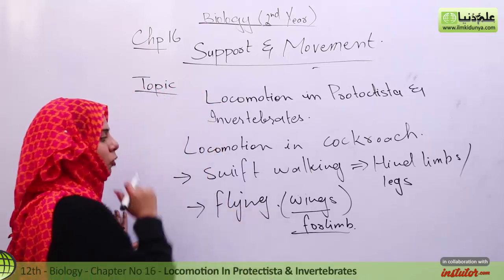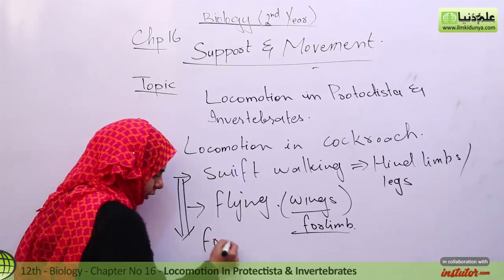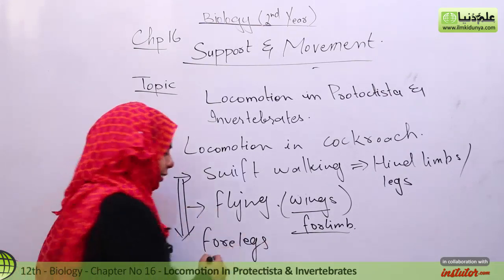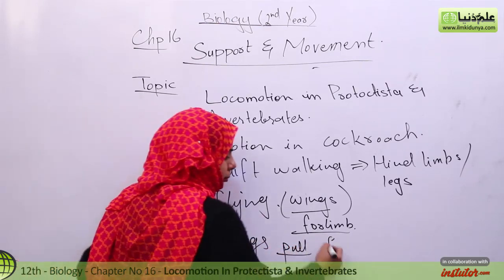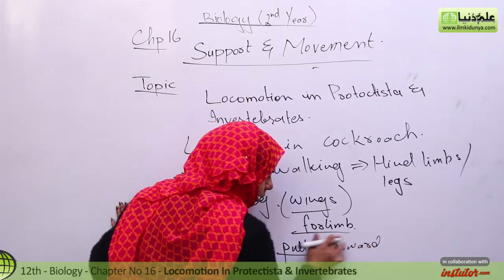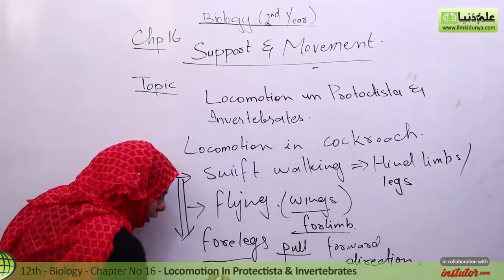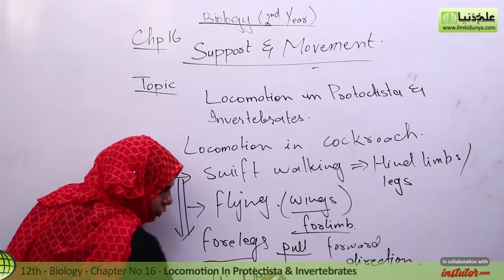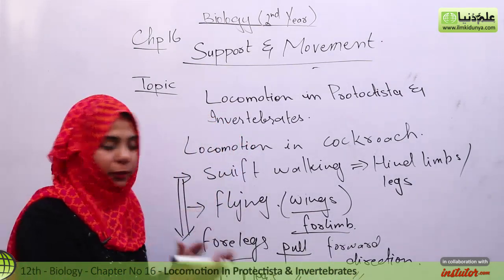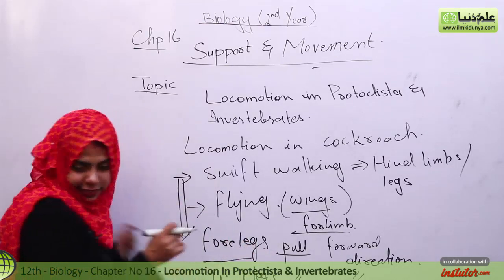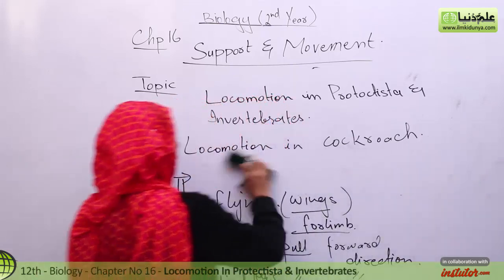So the cockroach walks using its legs alternately. The front legs pull the body in the forward direction. The hind legs push in the same forward direction. The mid legs act as props, providing support and balance during walking.